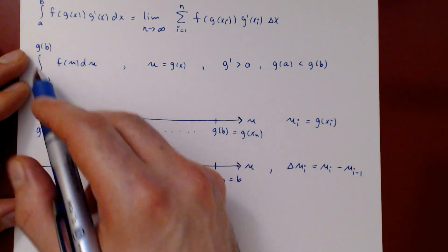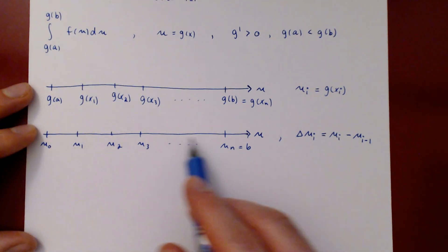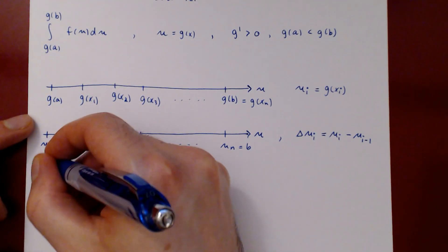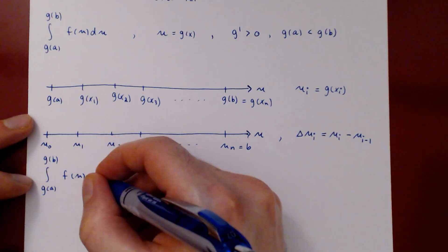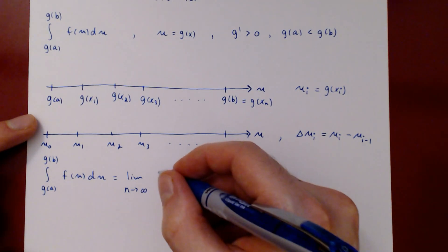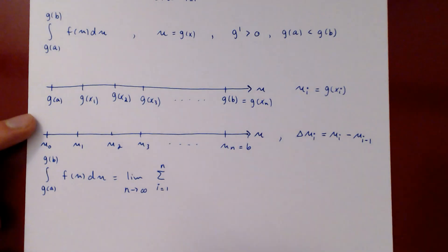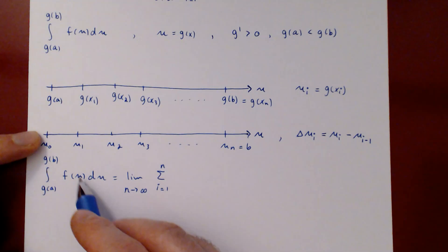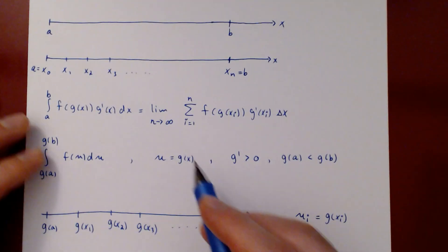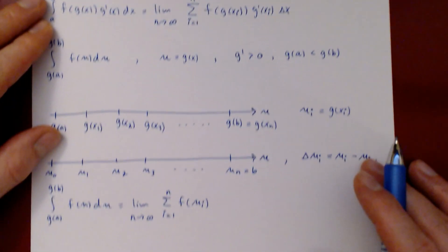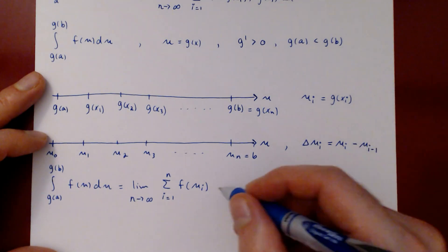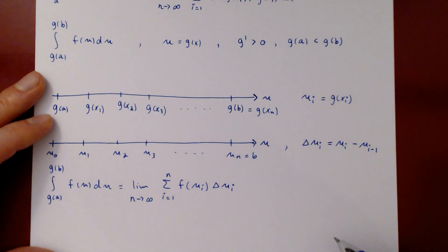With this partition we can write the new integral as a limit of a Riemann sum. The integral from g(a) to g(b) of f(u) du equals the limit as n goes to infinity of the sum from i=1 to n of f(u_i) times delta u_i, where we evaluate at the right-hand point and use the possibly non-uniform interval lengths delta u_i.